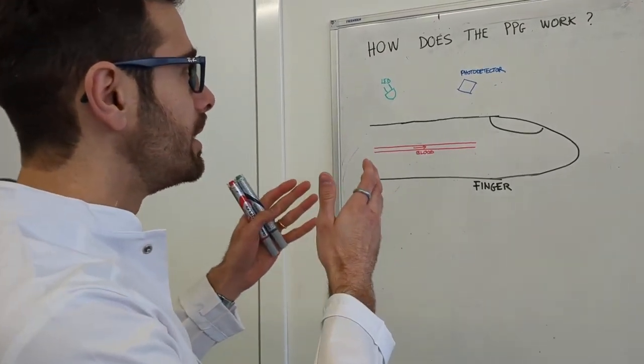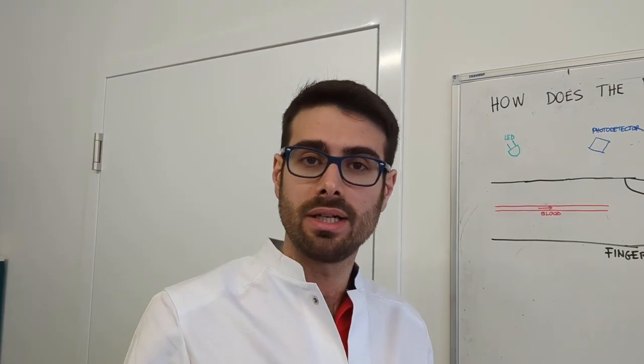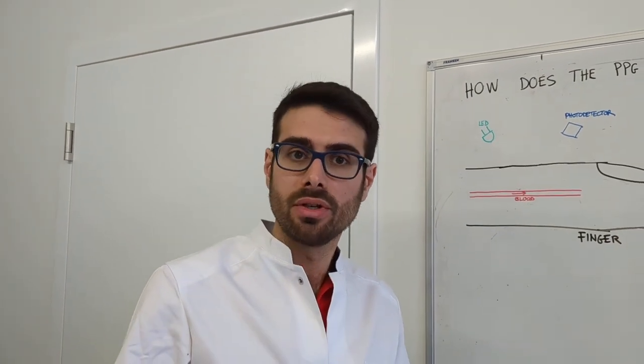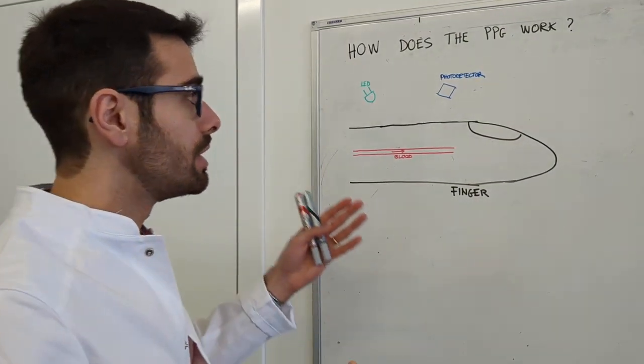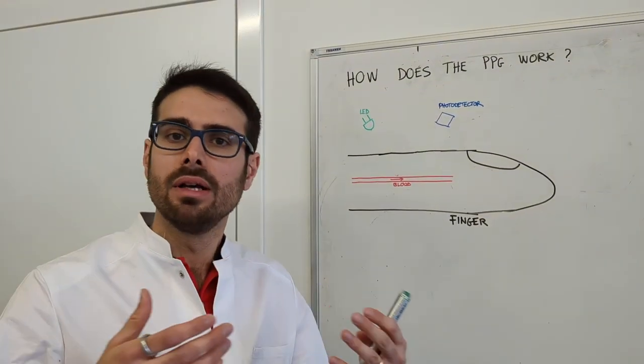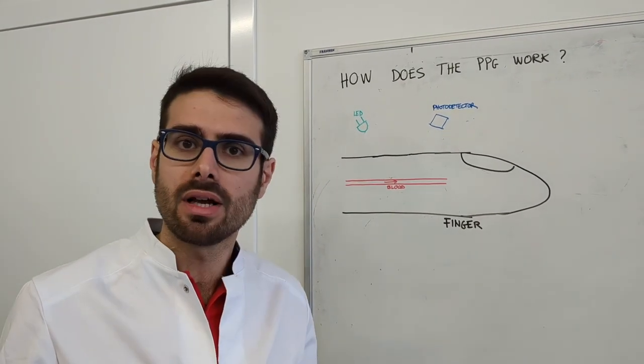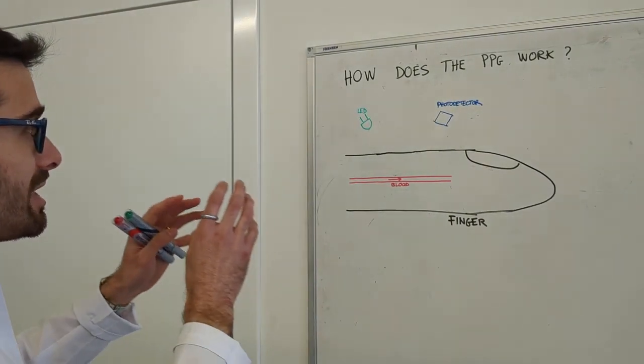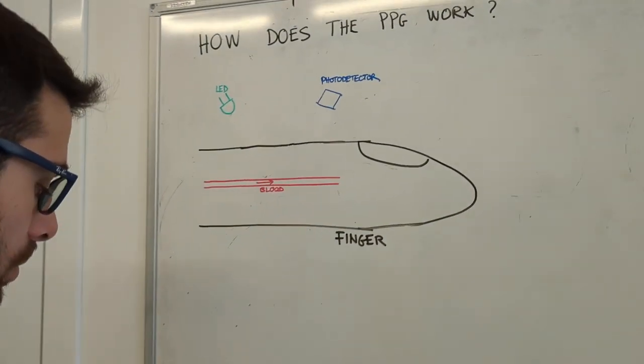Let's see together how the PPG works, how the technology behind the Iris ring works. First of all, PPG stands for photoplethysmography, which is an optoelectronic-based technology for assessing several vital signs by just shining light in the skin.